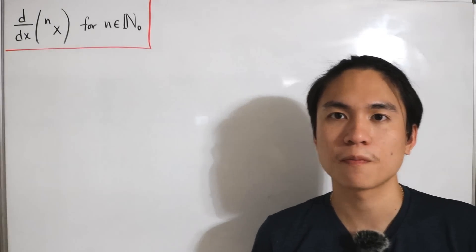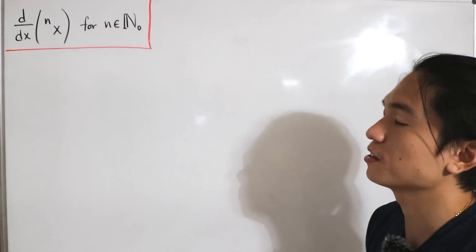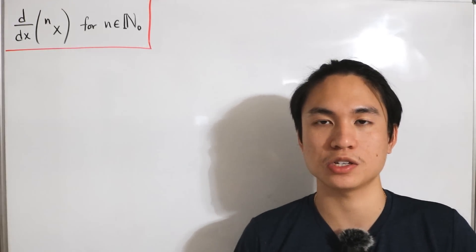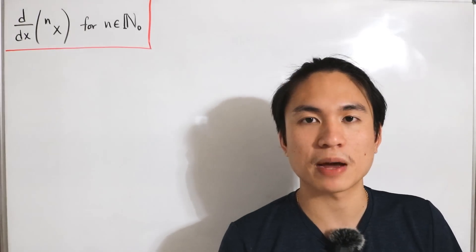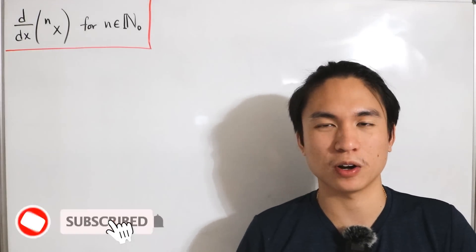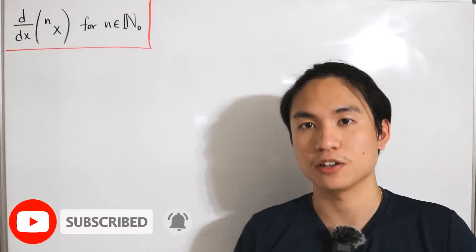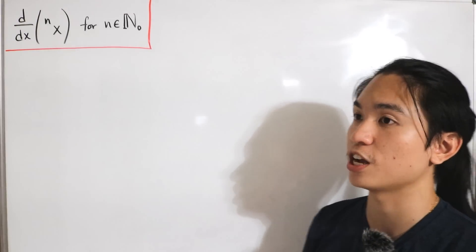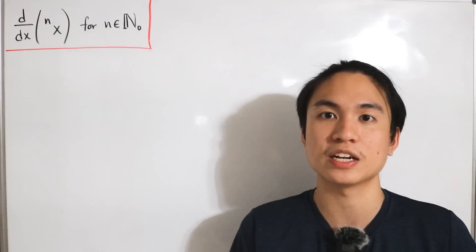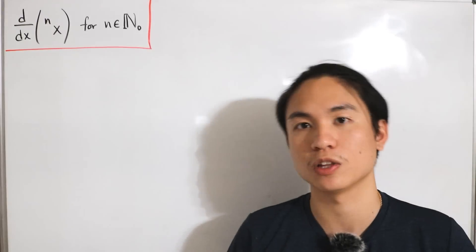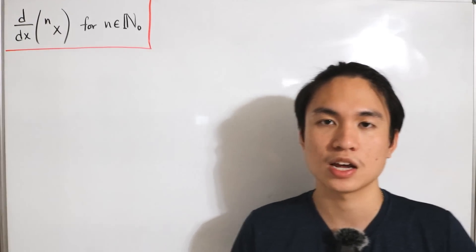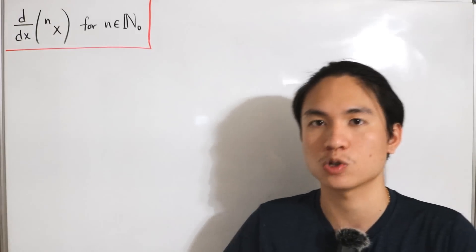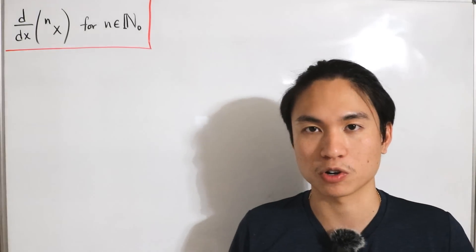Welcome back. We would like to find the derivative of the nth tetration of x for all natural numbers, including n equals zero. The notation has the exponent on the left side, which is the tetration — a special hyper operation where exponentiation is iterated. For example: n=0 gives 1, n=1 gives x, n=2 gives x to the x, n=3 gives x to the x to the x, and so on.